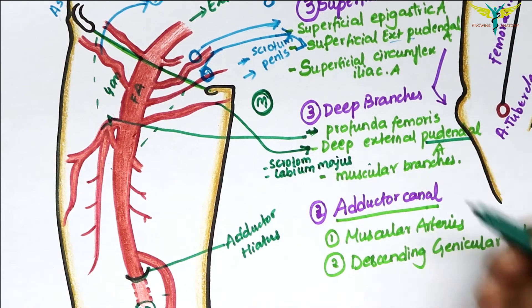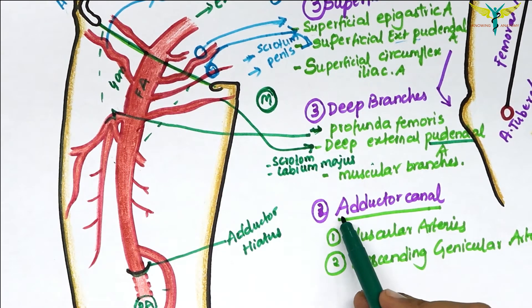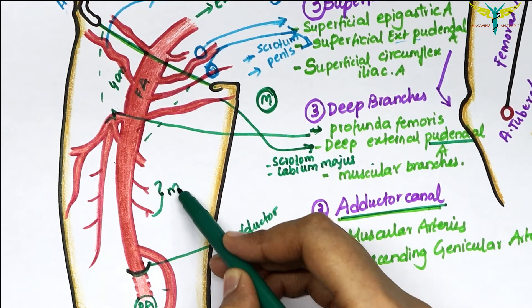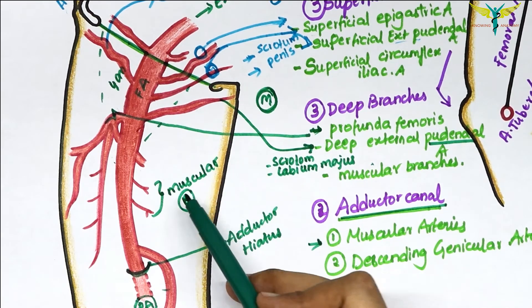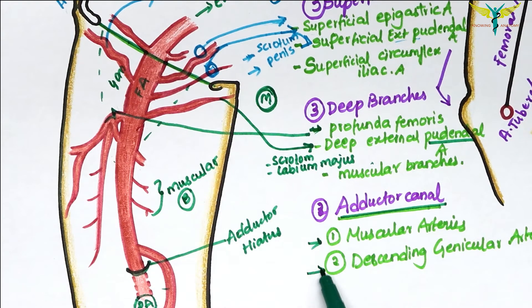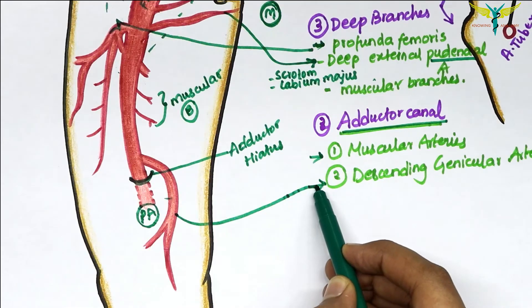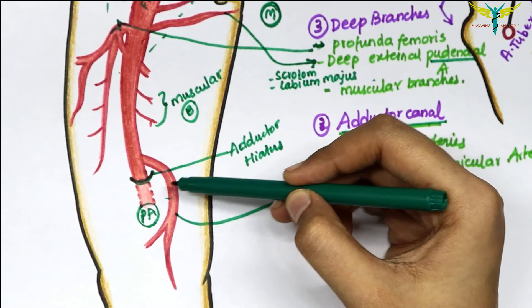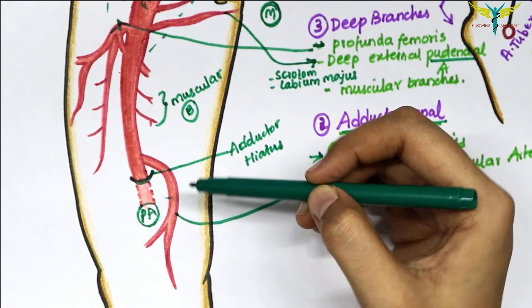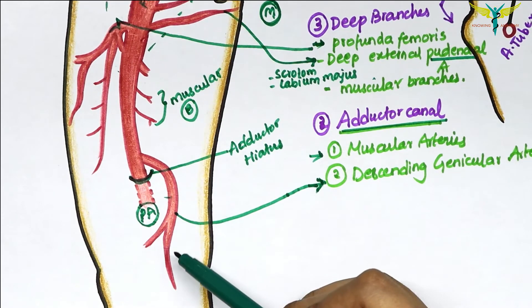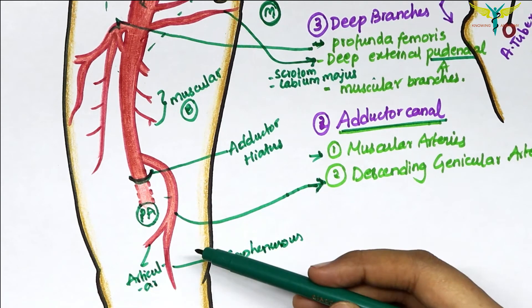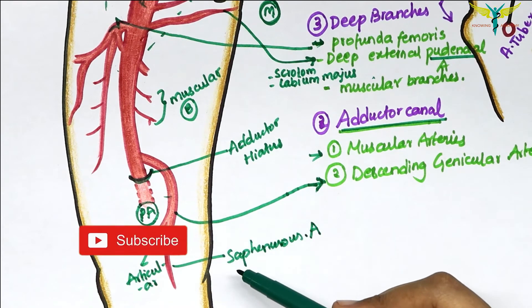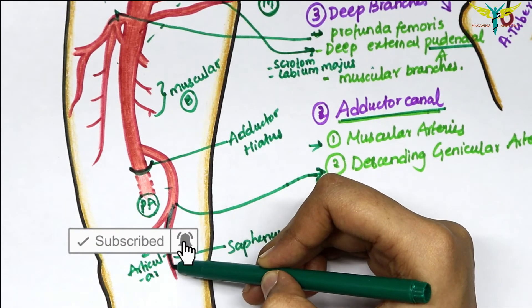The deep external pudendal artery also supplies the labium majus. In the adductor canal, the branches are the muscular arteries and the descending genicular artery. The descending genicular artery leaves the canal descending within the substance of the vastus medialis muscle and divides into articular and saphenous branches. The saphenous branch, also called the saphenous artery, accompanies the saphenous nerve and emerges on the roof of the adductor canal.